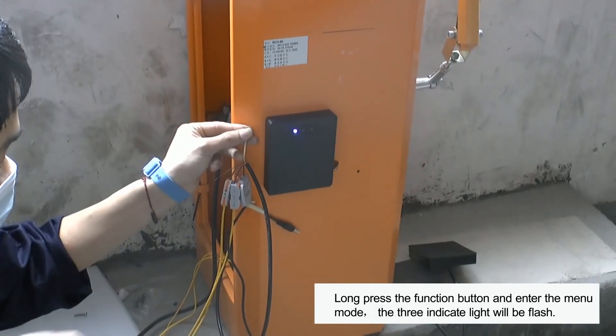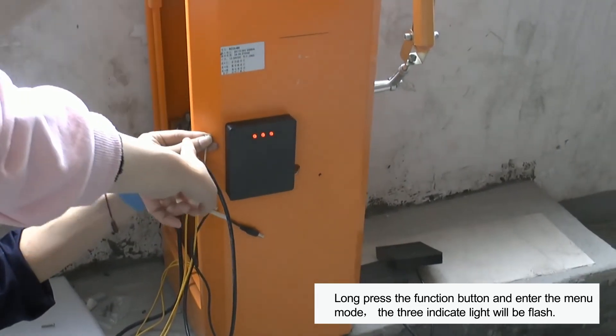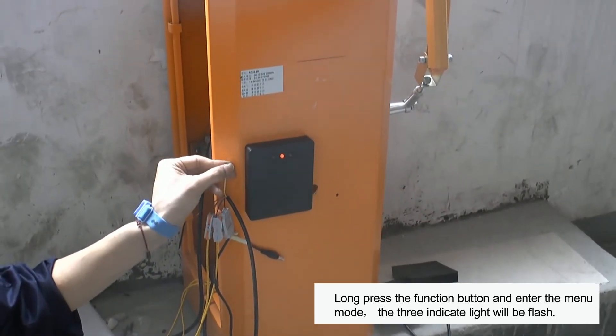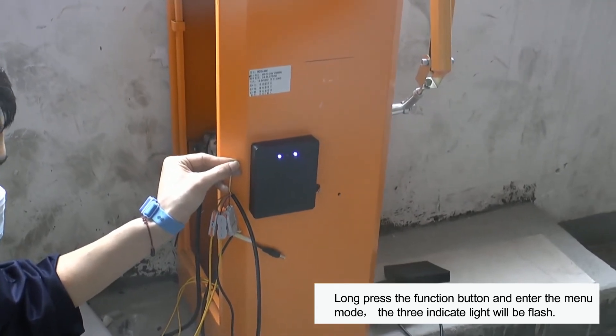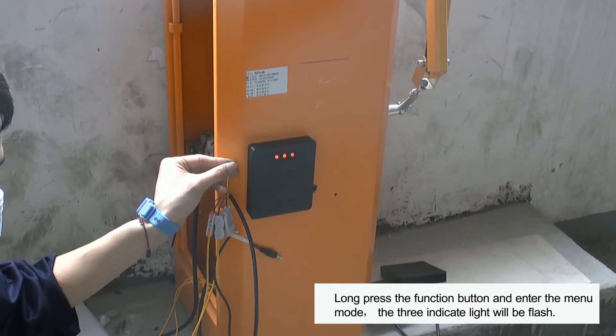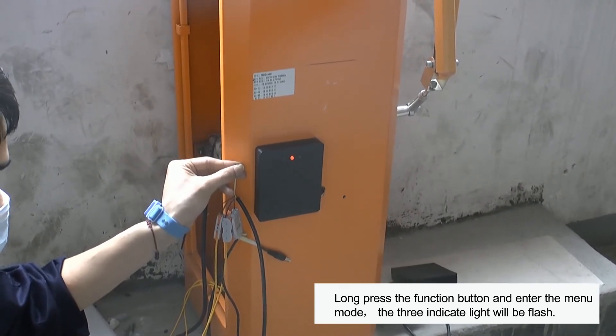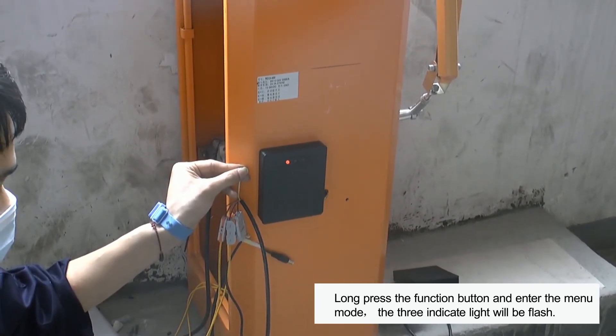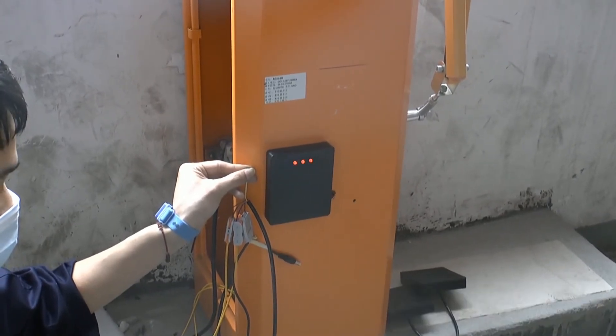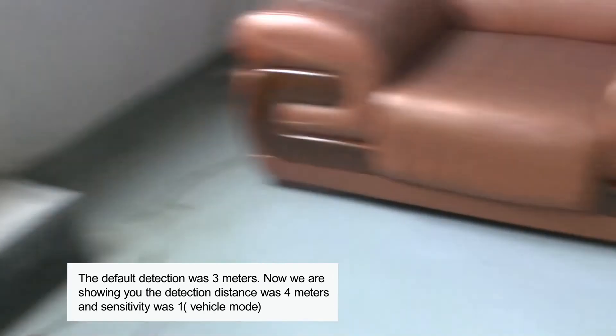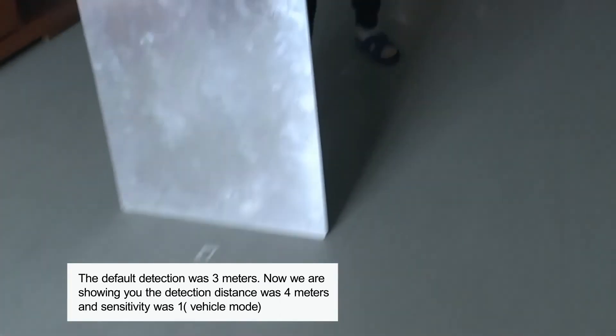Hello, please press the function button over 6 seconds to enter the menu mode. Now we are setting the 4 meters detection for the vehicle. Now you can see when the vehicle is in the 4 meters detection range.